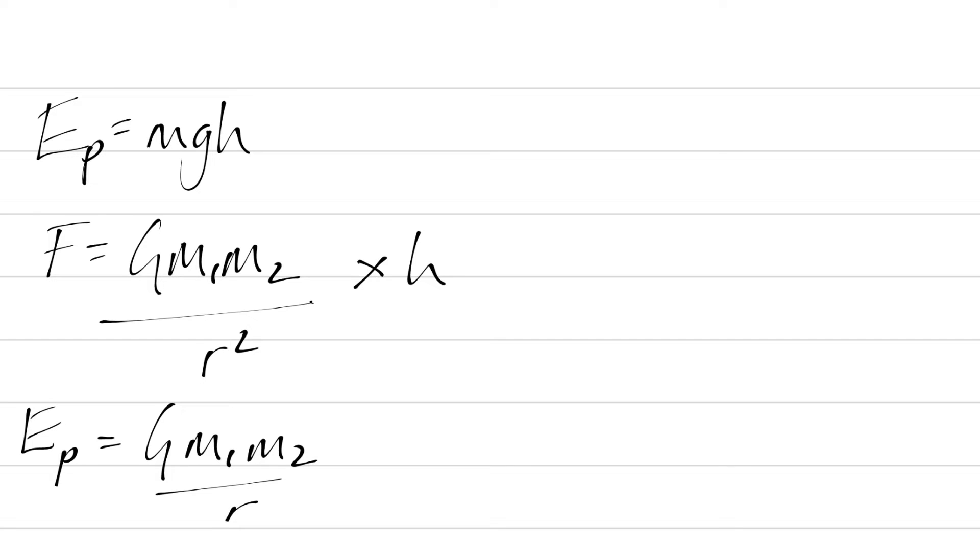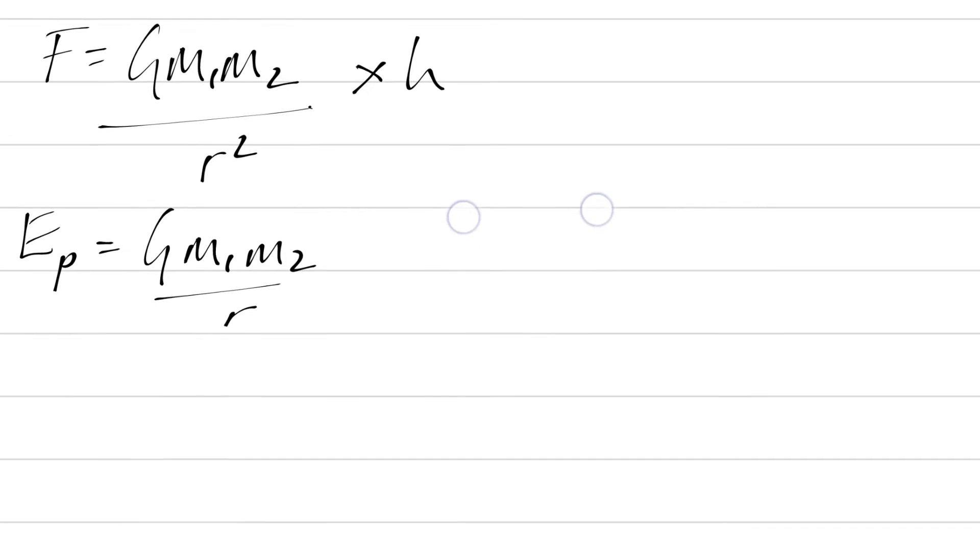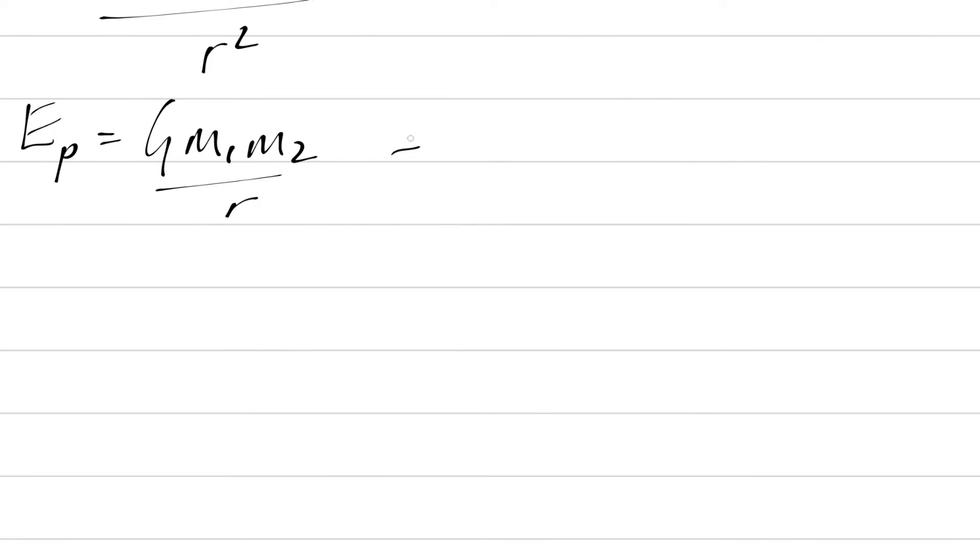This is going to allow us then to define what a gravitational potential is. So we take out one of the masses, m2, which is the object being attracted to the larger mass by just dividing by the mass. And you get this equation for gravitational potential equals Gm1 over r.